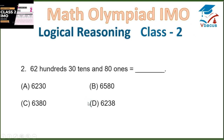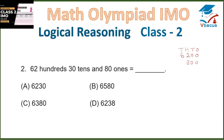Question 2: 62 hundreds, 30 tens and 80 ones is equal to? We have to put the place value. So 62 hundreds is 6200. Adding 30 tens and 80 ones, it will become 6580. So option B is correct.